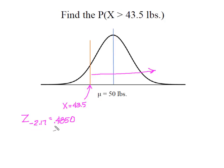We had that area of 0.4850 associated with that z of negative 2.17, and so I know that is this area between my value of x and the mean. So 0.4850 from here to here.